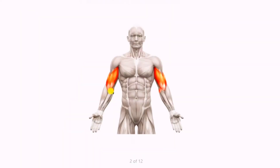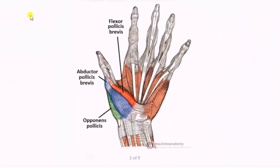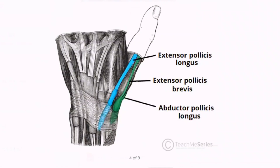Here we have biceps brachii and coracobrachialis muscle, which is a small triangular muscle sometimes blended with triceps brachii and extensors. The thenar muscles move the thumb and include flexor pollicis brevis, abductor pollicis brevis, and opponens muscle. The hypothenar muscles include flexor digiti minimi, abductor digiti minimi, and palmar aponeurosis.